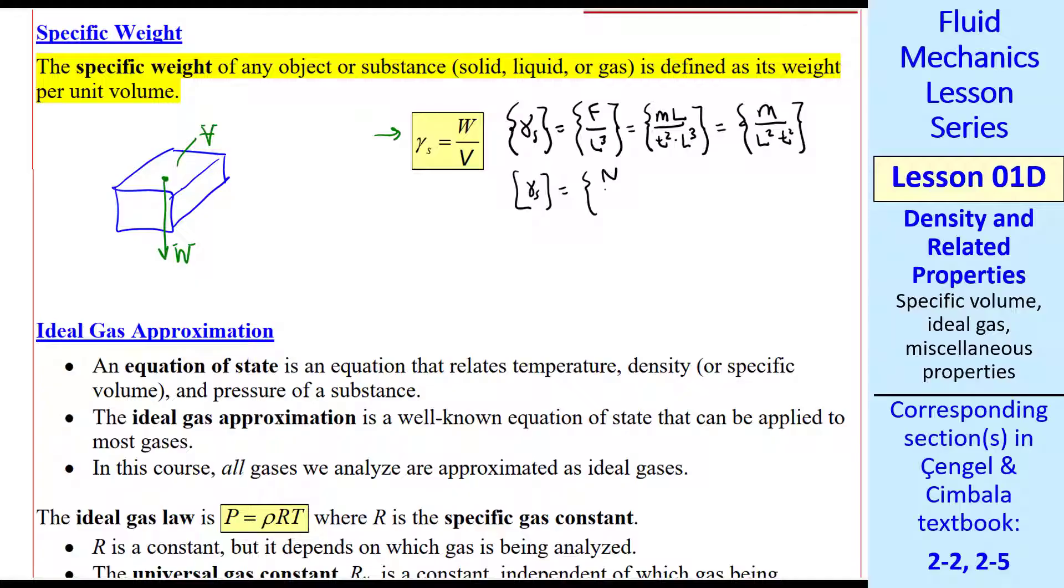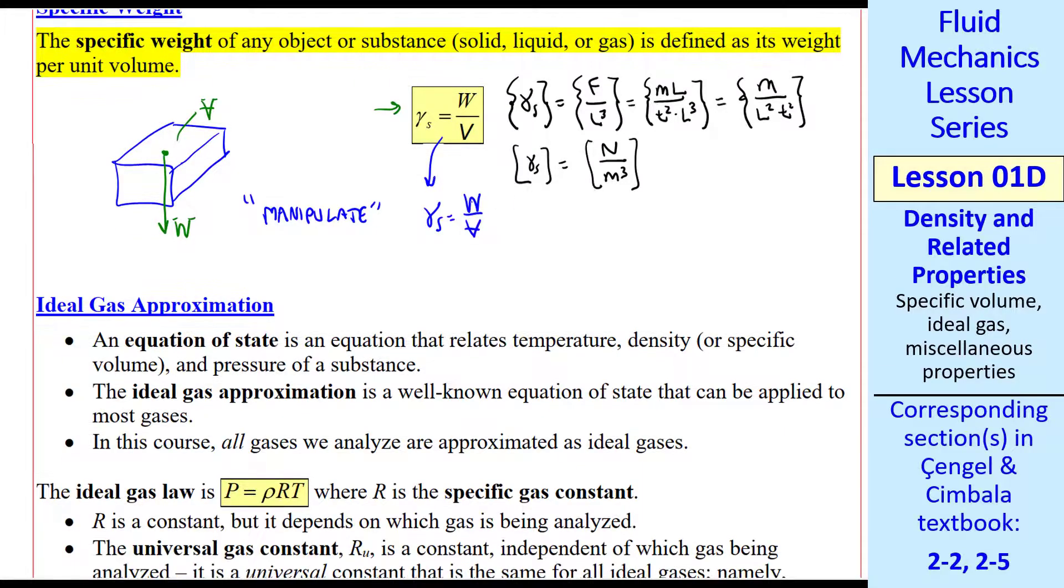I like to use the word manipulate where we take this equation and modify it in some way. Start with gamma s as W over V, but the weight is mass times gravity, and we recognize M over V as the density, so this becomes rho g.